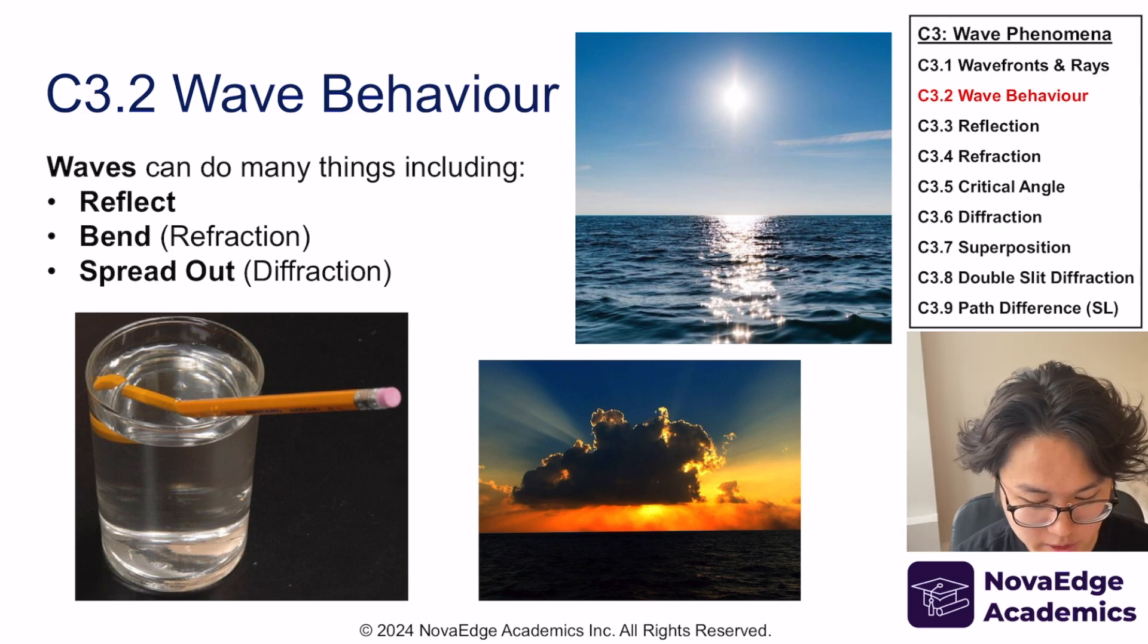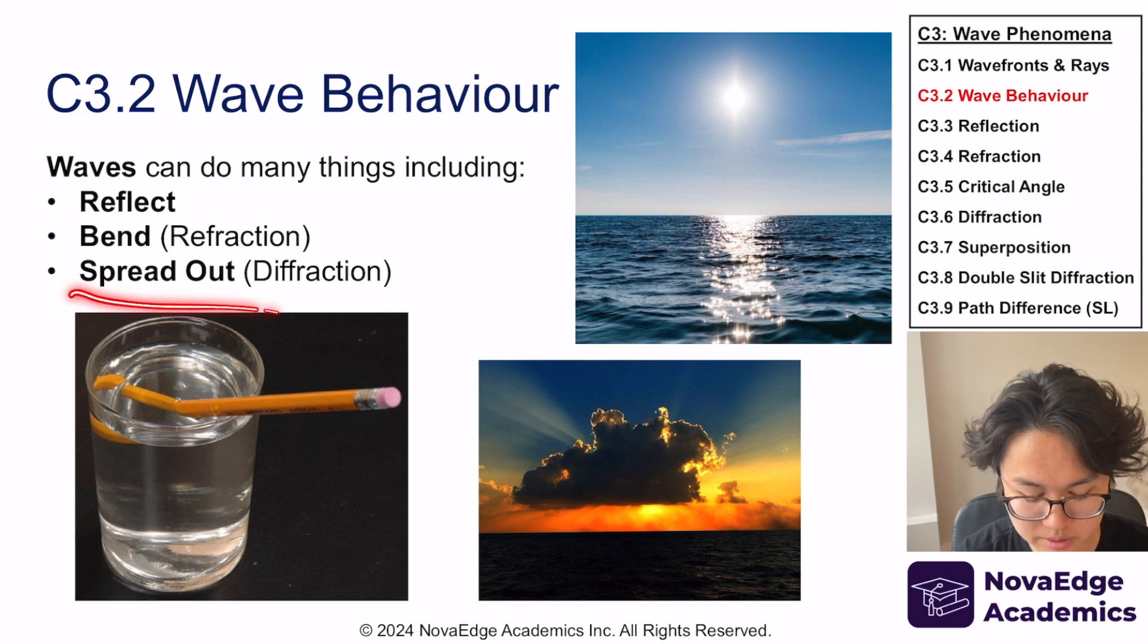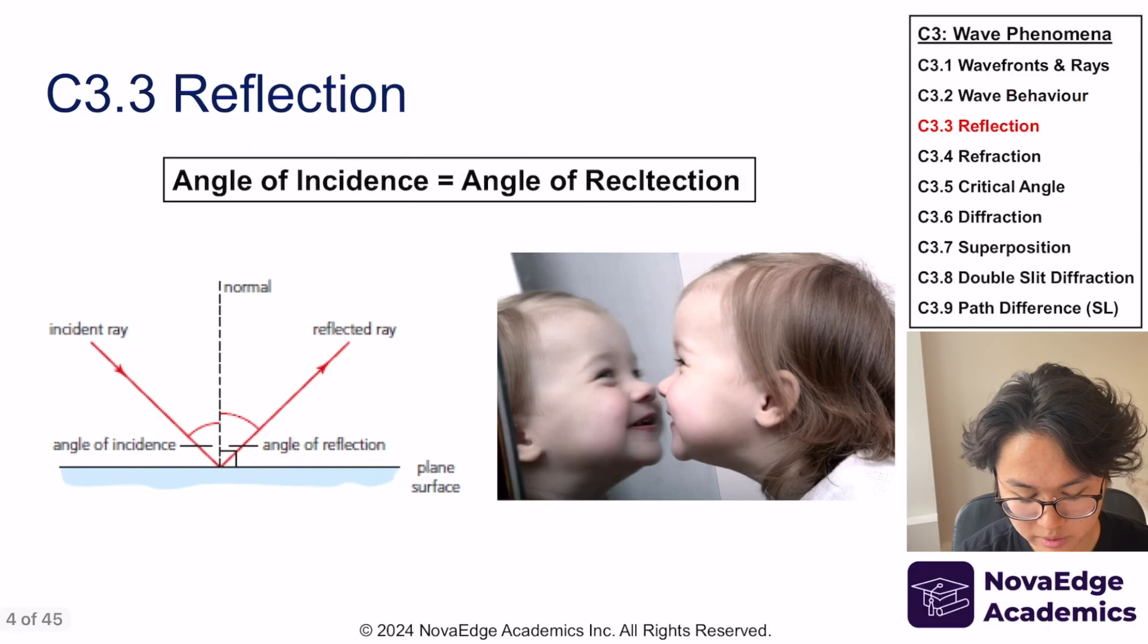It can also bend. So light can also bend. If I stick a pencil inside a cup of water, it looks like it's bent, and that's because of something called refraction. We're going to talk about it more in detail. Last thing you can do is it can spread out, it can diffract. We call it diffraction. This one is going to be a heavy topic. We'll be covering that in the next video. Today we're going to be focused on reflection and bending.